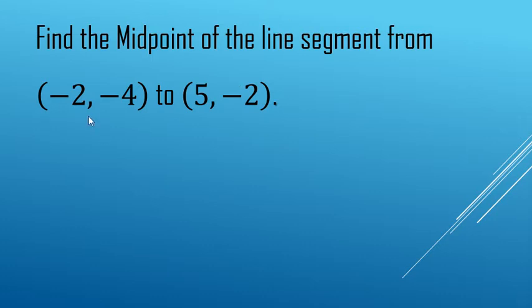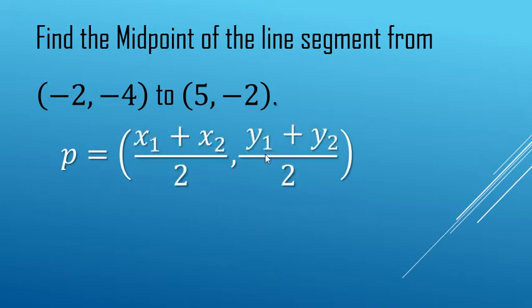We're going to find the midpoint of these two points. Looking at the formula, it is a coordinate point with parentheses and a comma. We add the x's and divide by 2, add the y's and divide by 2, to find the x and y values.